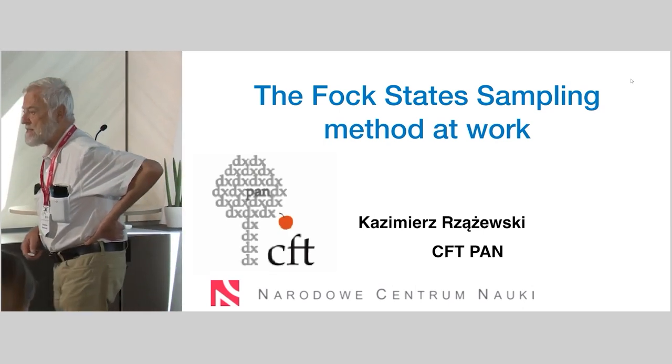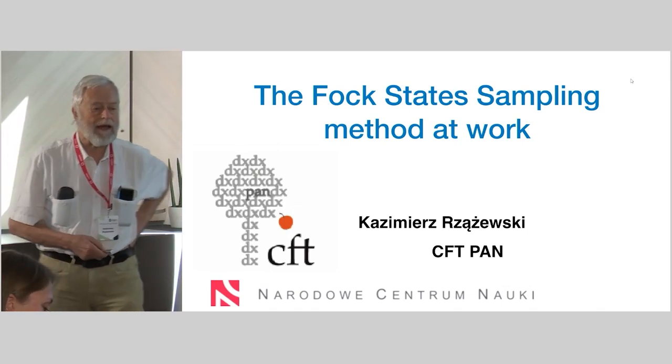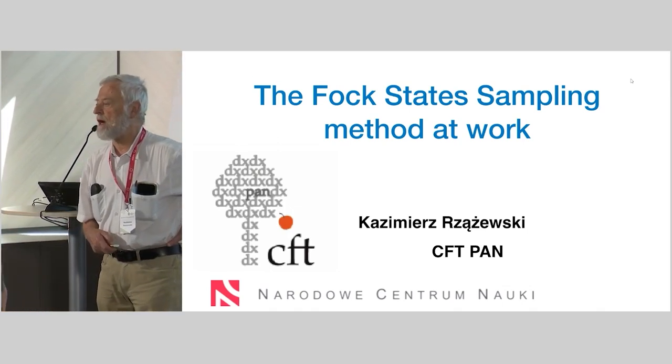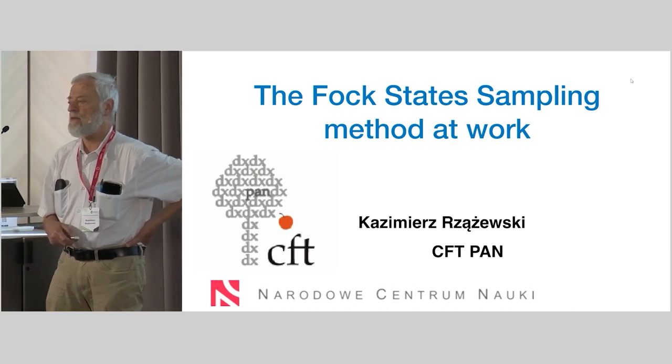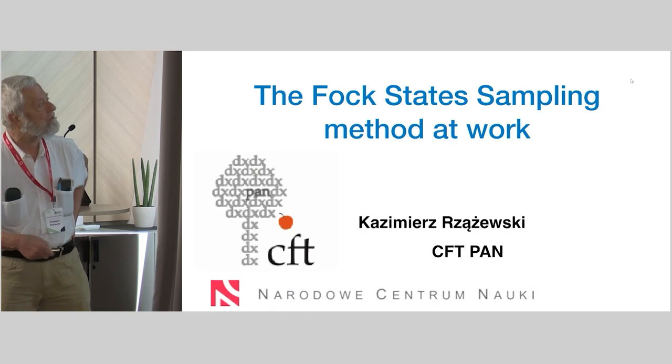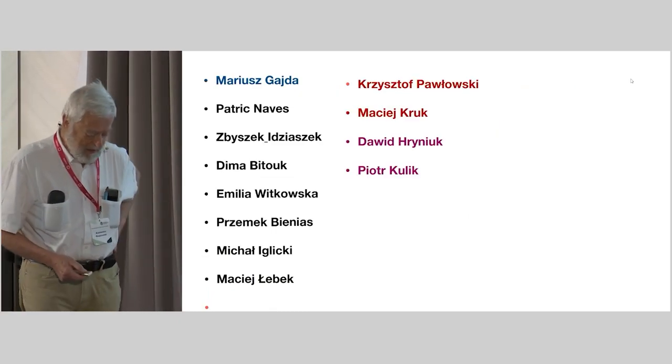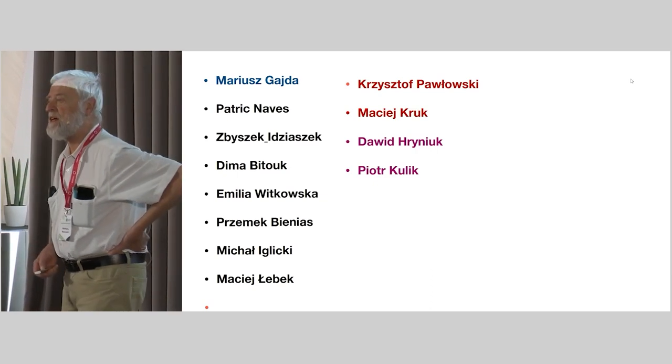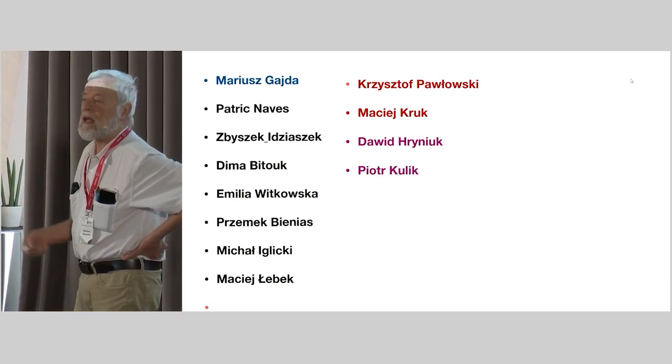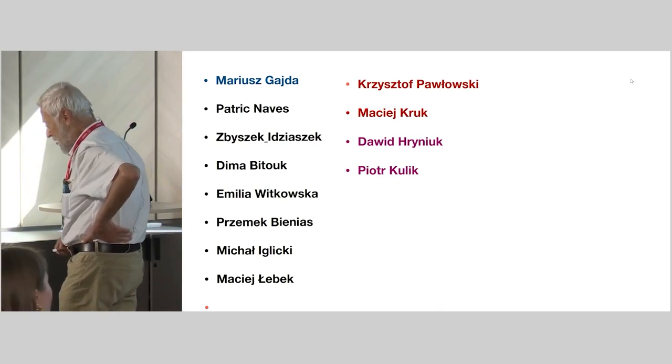I will be talking about a very fundamental issue - statistical properties of the ideal and also weakly interacting Bose gas. This means condensate, of course - Bose condensate. This is a subject which in some sense could have been started already by Einstein in the 20s, but has been noticed as an interesting problem about 20 years later by Schrödinger.